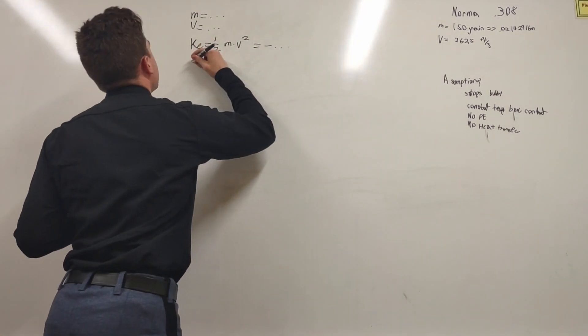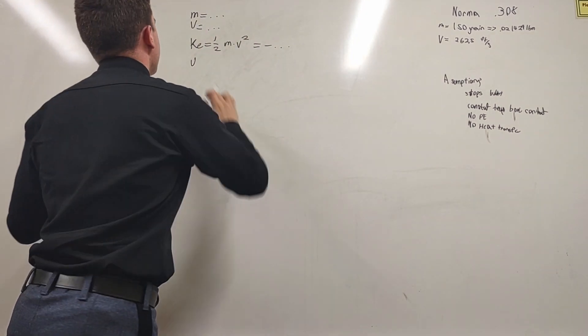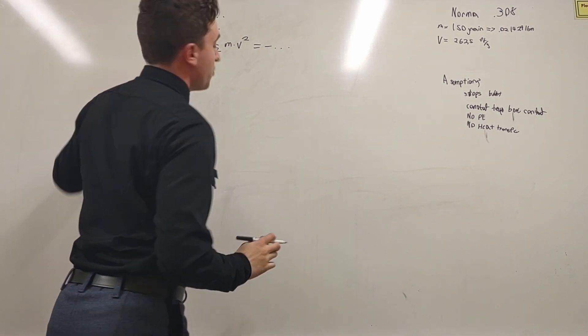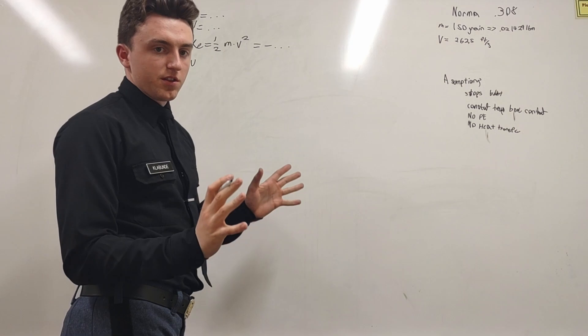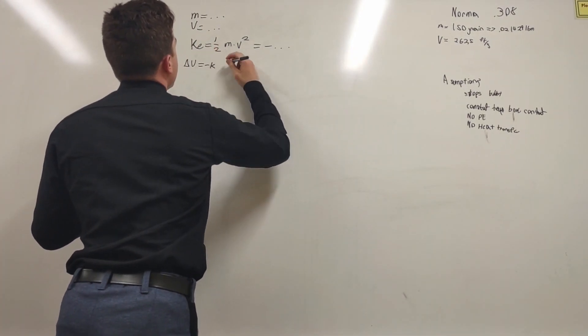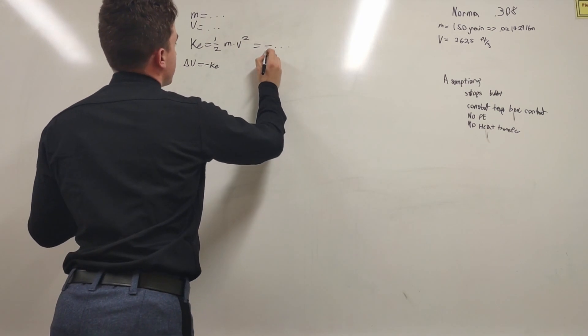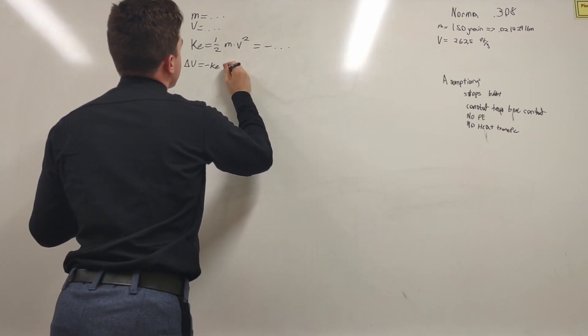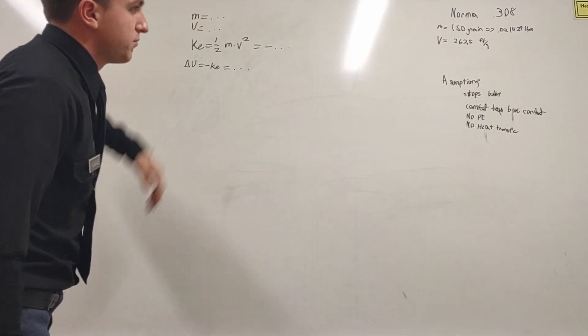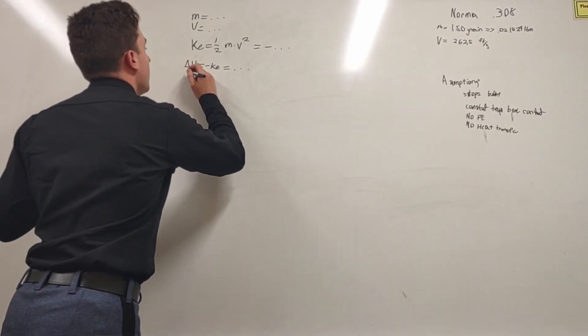Now to find what you're looking for, you're going to take delta U - that's what you're solving for, as weird as that may sound if you're not used to thermodynamics - equal to negative KE, essentially getting rid of that negative. Which is just that, but positive.